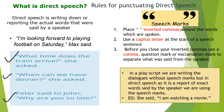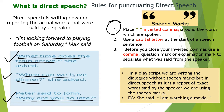So there are some rules to punctuate direct speech. First rule: place the inverted commas around the words which are spoken. The sentences which are spoken are: 'What time does the train arrive?', 'When can we have dinner?', 'Why are you so late?' So when you begin to write that sentence, you have to place the inverted comma at the start and close the inverted comma at the end.